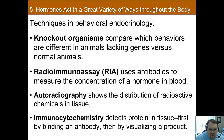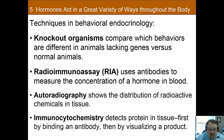One modern-day method is similar to what Berthold did over a hundred years ago — removing a hormone and looking for differences. Through breeding we can create knockout organisms, which are organisms with the gene removed for the receptor of that hormone. If you don't have the receptor, you're not going to be sensitive to that hormone. Knockout organisms are very good for looking at what each hormone does based on presence or absence.